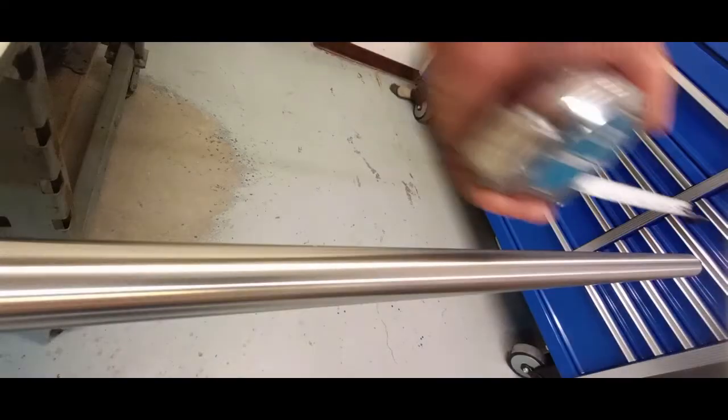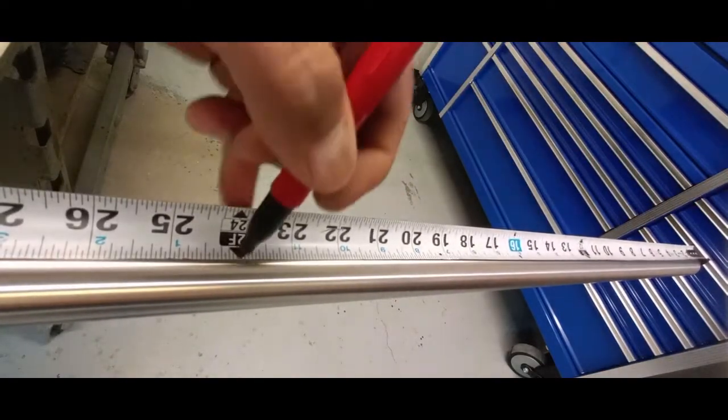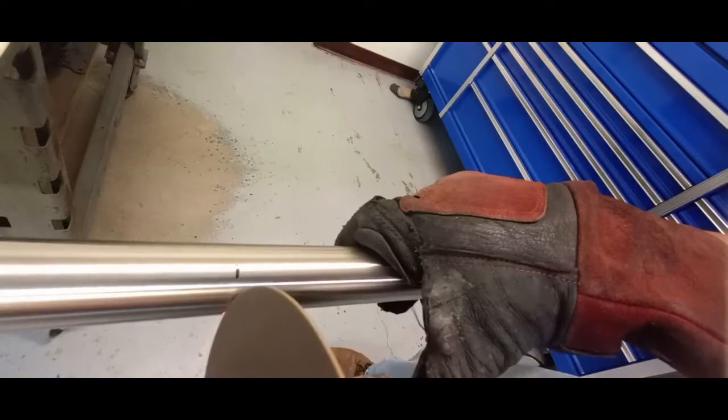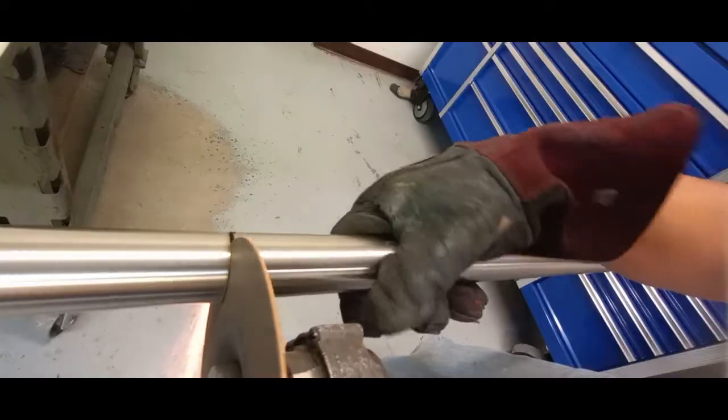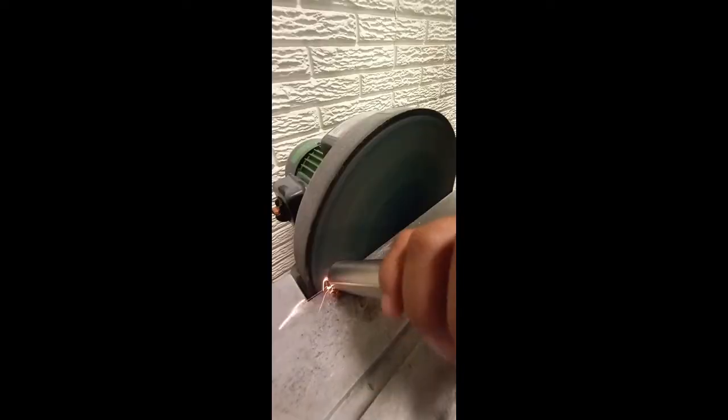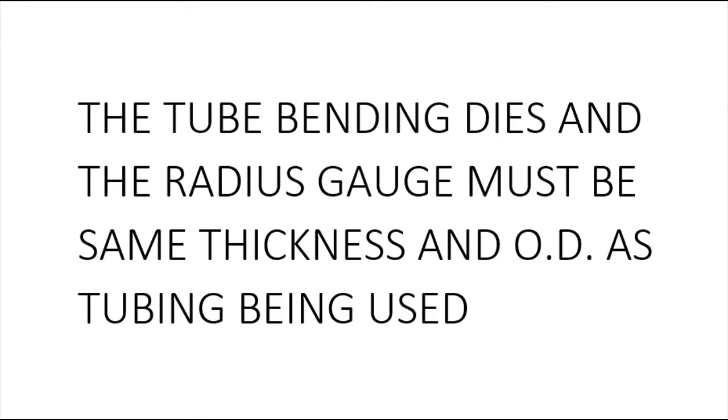So first we're going to start by measuring out about two foot of sacrificial metal. We're going to create our radius gauge out of this and it's the same size tubing that we used. Now this is important: the tube bending dies and the radius gauge must be the same thickness and OD as the tubing being used.